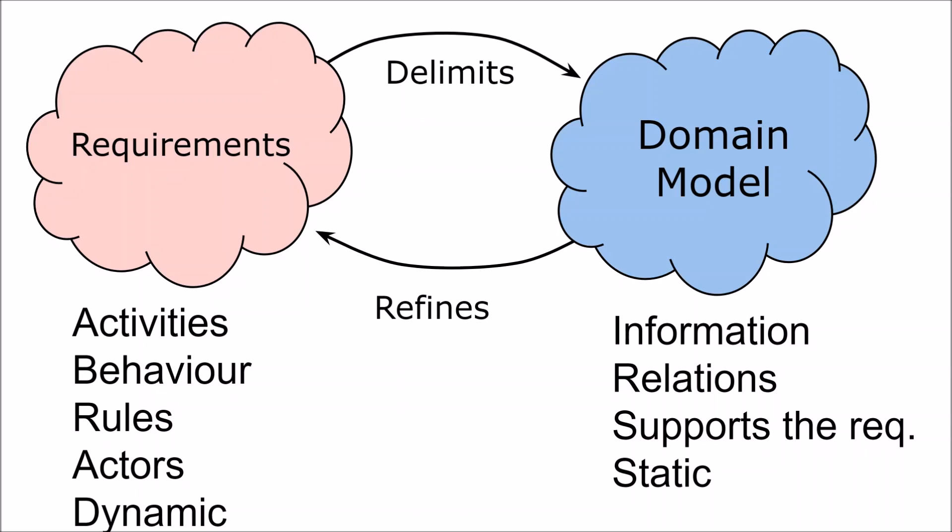Requirements are really good at specifying behavior, rules, and activities. In short, requirements are often dynamic — they tell what should happen if this happens, what should happen in this case, what should the system do, who does what. The domain model is static. It shows information and the relations between information blocks, and it should support the requirements. In short, the domain model should provide the information needed so that the requirements can be executed. If you remember this, you should be fine.